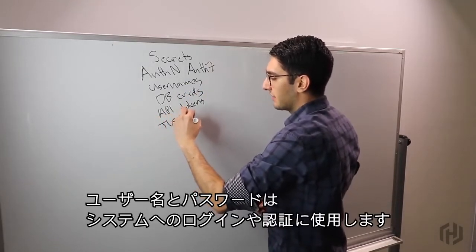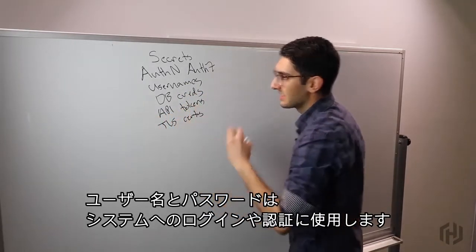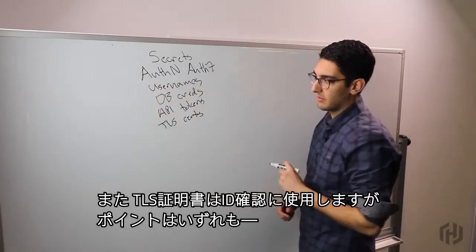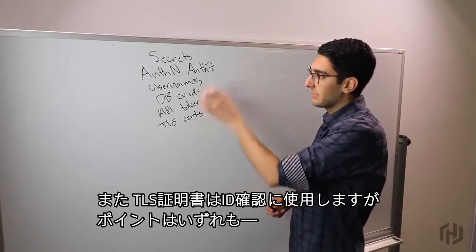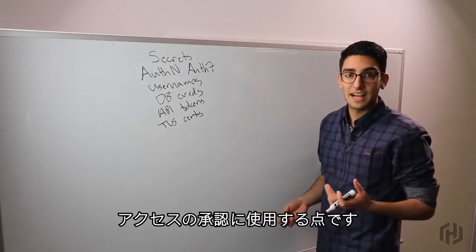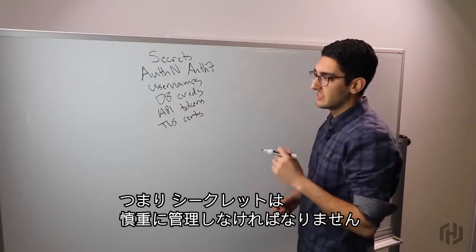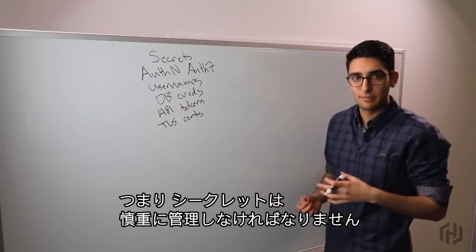The point is any of these things we can use to either log into a system and authenticate, such as a username and password, or we're using it to prove our identity, something like a TLS certificate, and so we're using it to authorize access potentially. All of these things fall in the realm of secrets, and these are things we want to carefully manage.